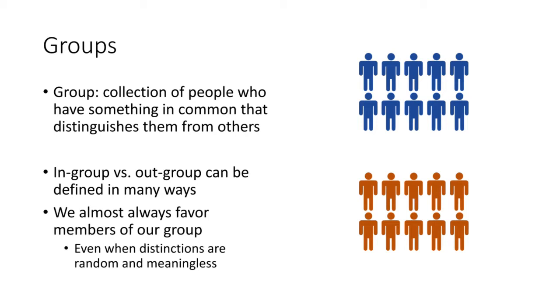We almost always favor members of our group, and sometimes the distinctions between groups can be completely meaningless. When I've taught this course in person, sometimes I just divide the room in half, you're group A, you're group B, and that, even a distinction like that is enough to lead to group favoritism, favoring the in-group versus the out-group.